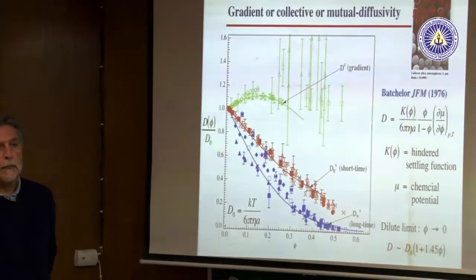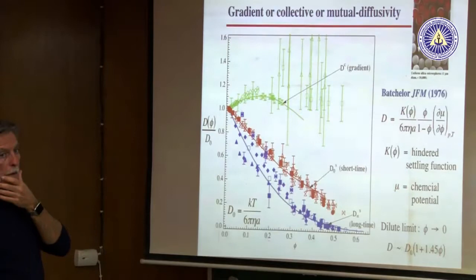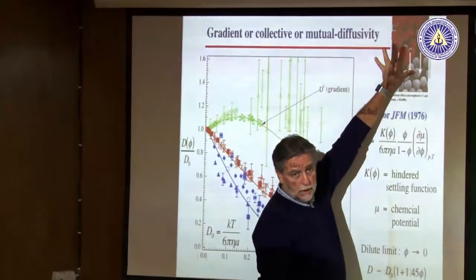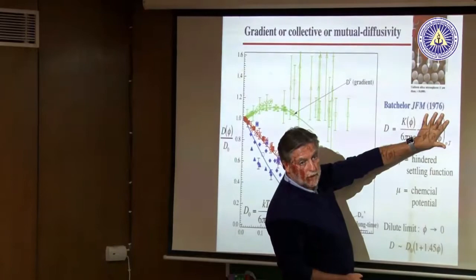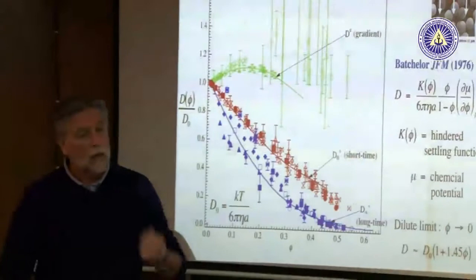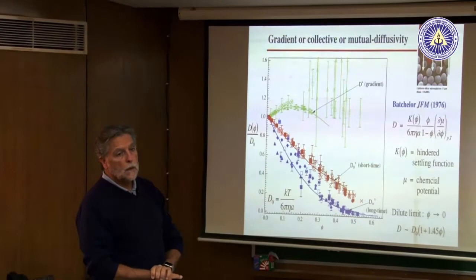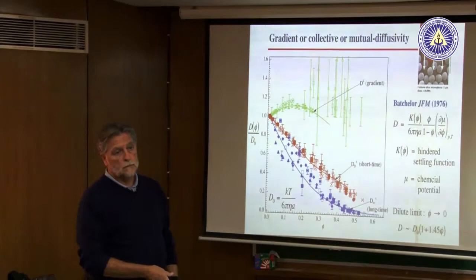The collective diffusion is essentially like sedimentation — all particles moving collectively together, with solvent going back in the opposite direction. The driving force is the gradient of chemical potential. It's similar to advection in that sense: it's proportional to the gradient of something.